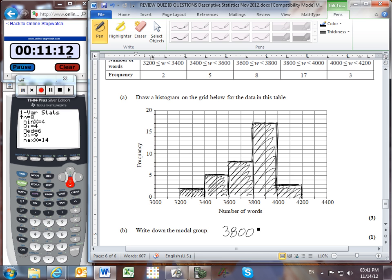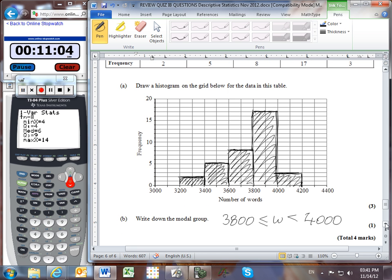The modal group, the one that occurred the highest, the most frequently, is W greater than or equal to 3,800, but less than 4,000. And that completes the review sheet. Good luck on your quiz.